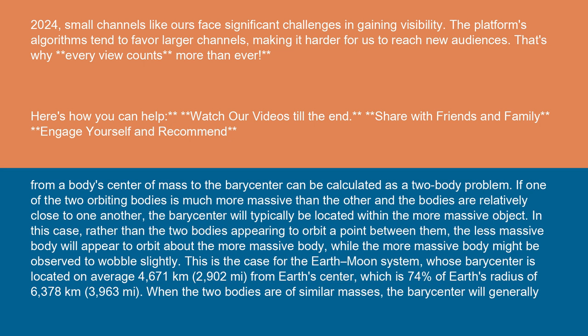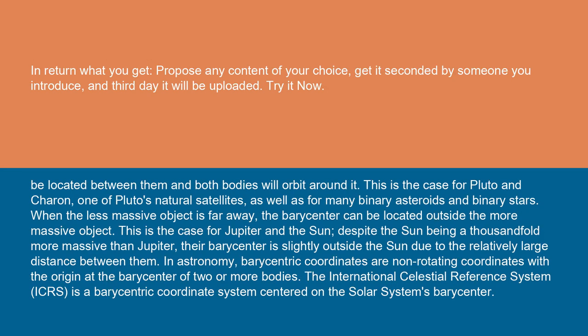When the two bodies are of similar masses, the barycenter will generally be located between them and both bodies will orbit around it. This is the case for Pluto and Charon, one of Pluto's natural satellites, as well as for many binary asteroids and binary stars.